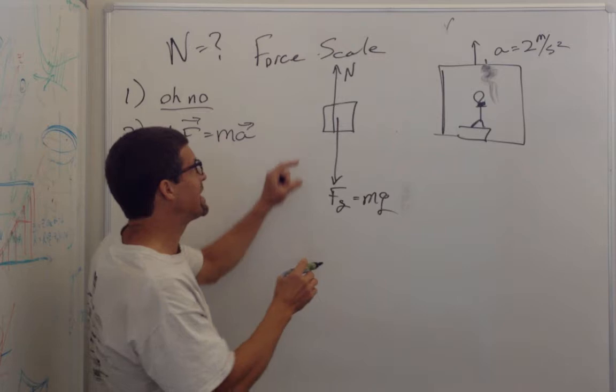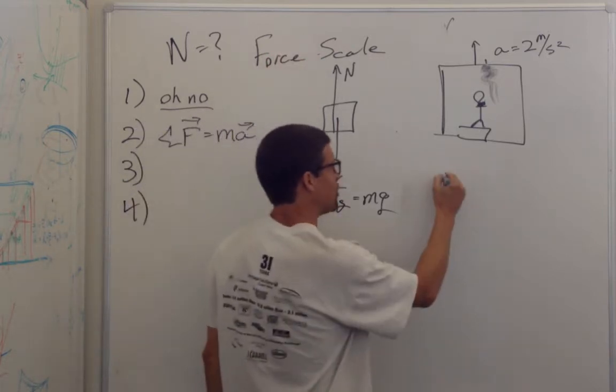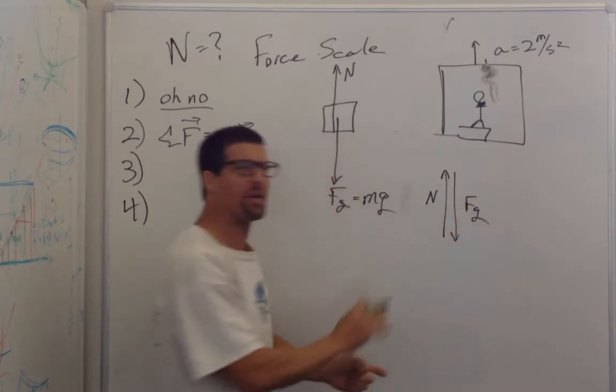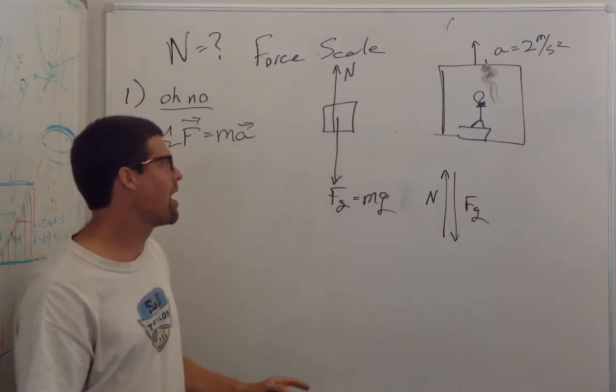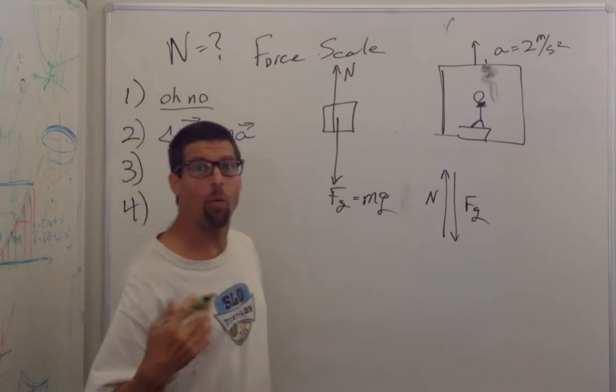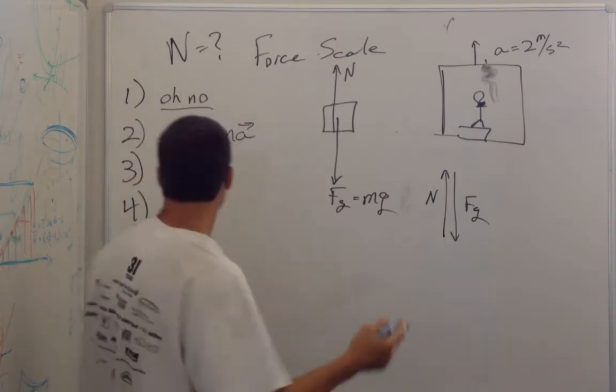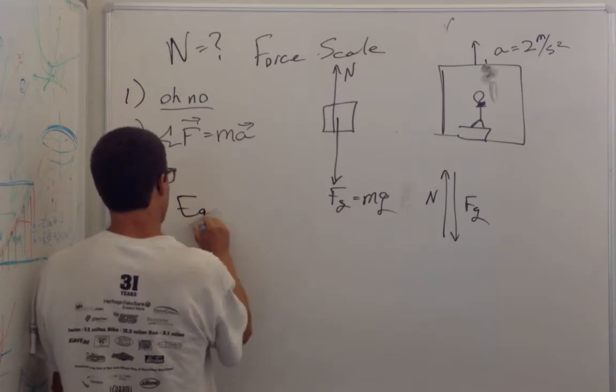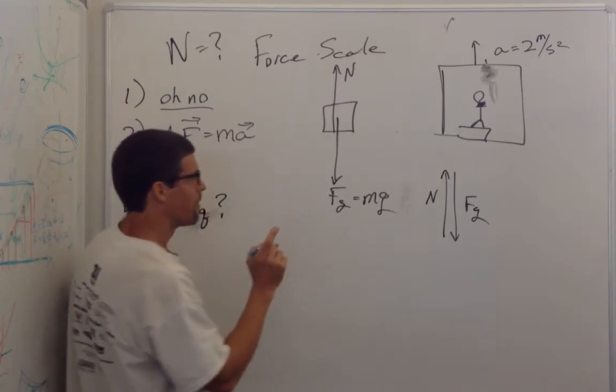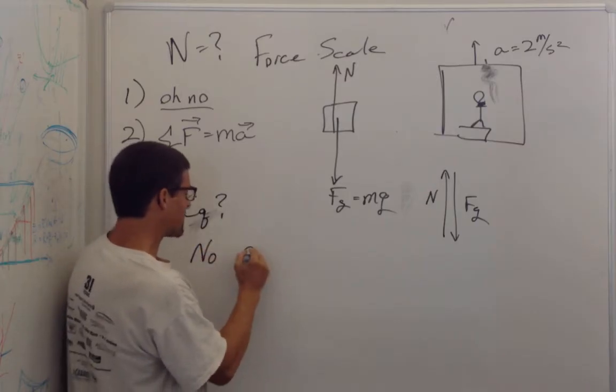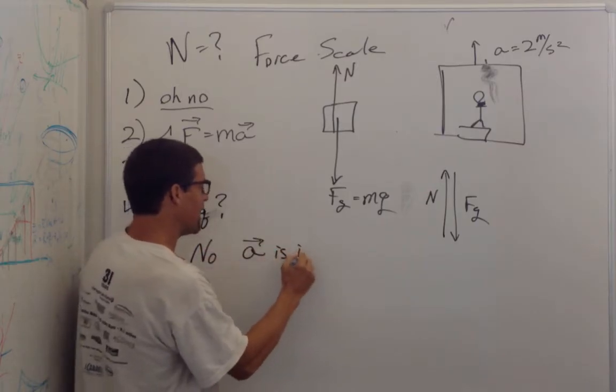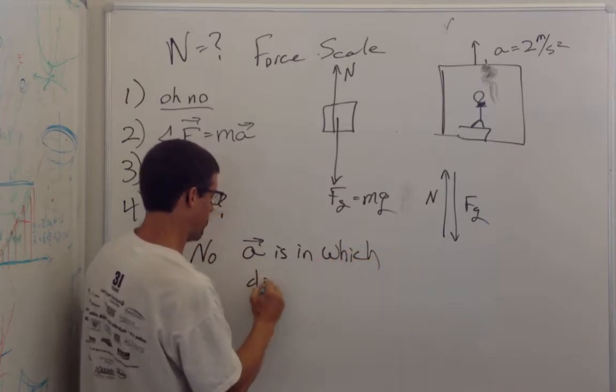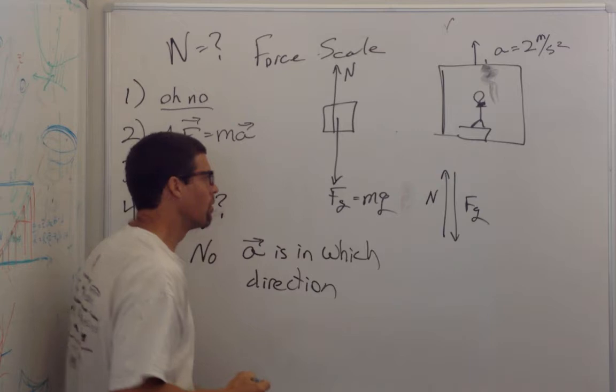Is the system in equilibrium? If it is, then I know the forces have to add to zero, and I can just set the force of gravity and normal force equal to each other, and I'm done. If it's not in equilibrium, I want to know the direction of the acceleration. So first is equilibrium, and if the answer is no, then the acceleration is in which direction?